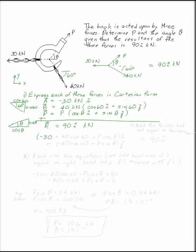So I have minus 30 kilonewtons in the i direction, plus 40 cosine 60 in the i direction from B, and plus P cosine theta in the i direction from P. Those are the i forces. I also have minus 40 sine 60 in the j direction, and plus P sine theta in the positive j direction.